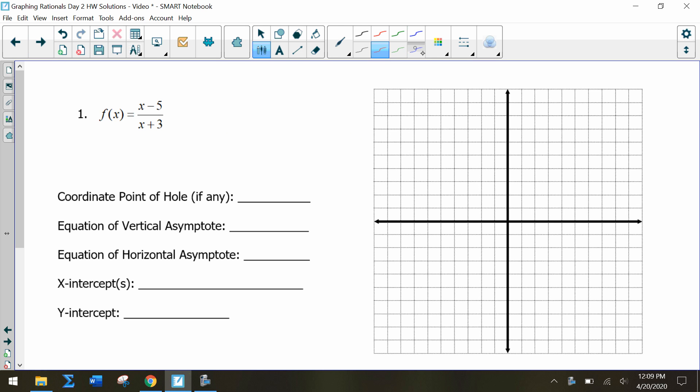This is day two homework. Looking at this problem, notice it's already in factored form, so there is no hole. There's no common factor on the numerator or denominator, but we do have a factor in the denominator, and that would be our vertical asymptote. So x = -3 when we solve for 0.